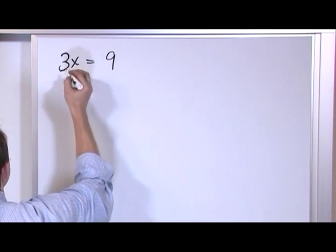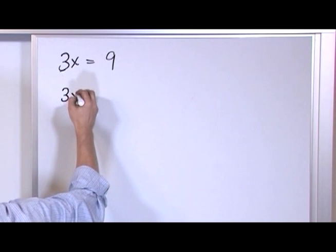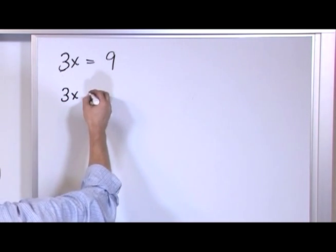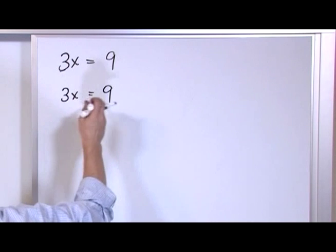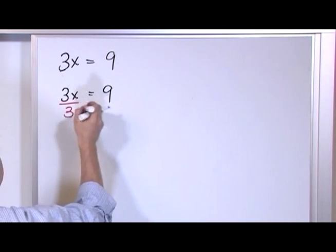So, in order to get x by himself, we have to do the opposite. We have to do division. So let me rewrite the equation. I can divide both sides of this equation by 3.